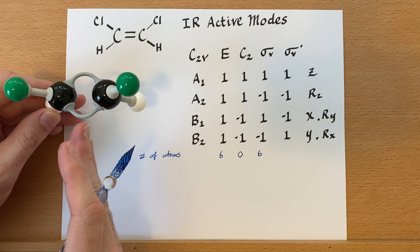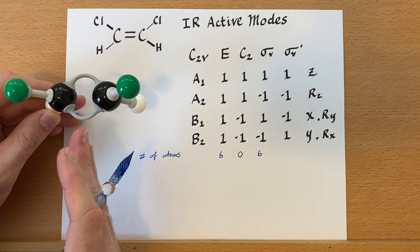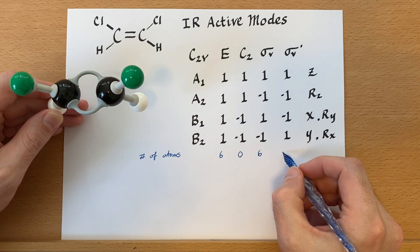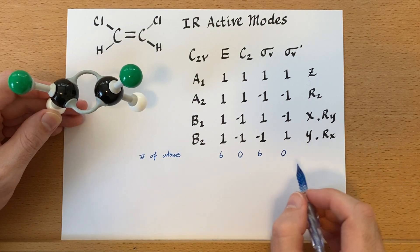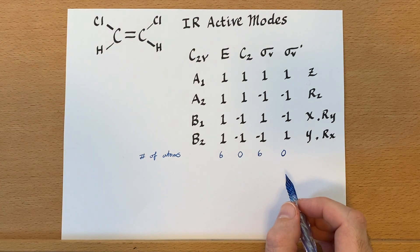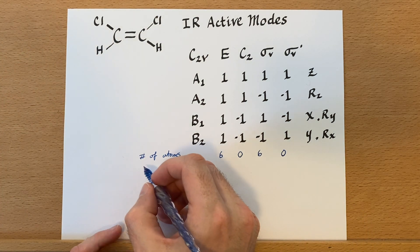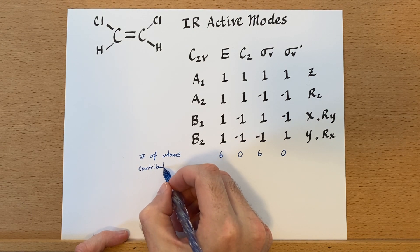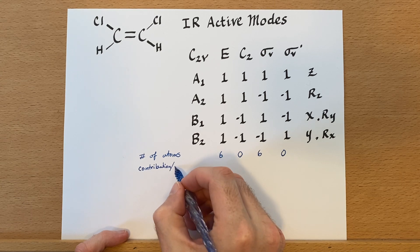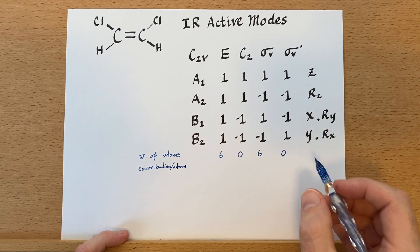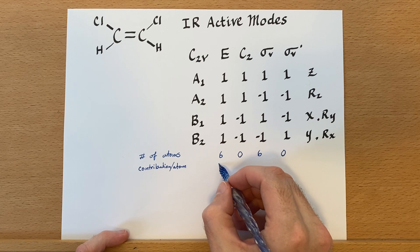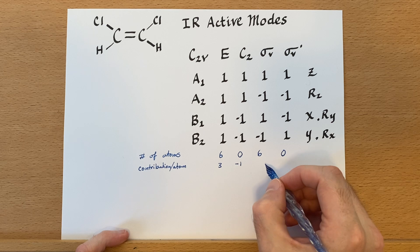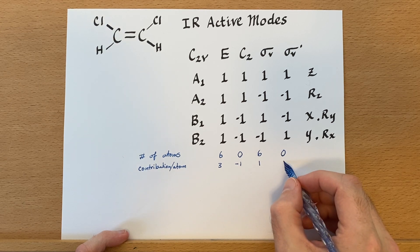And then we go to the other plane of symmetry, which is this one, and all of the atoms will move, so there's none that are stationary. Next, we move on to the contribution per atom. And for the identity operation, it's three. For C2, it's negative one.